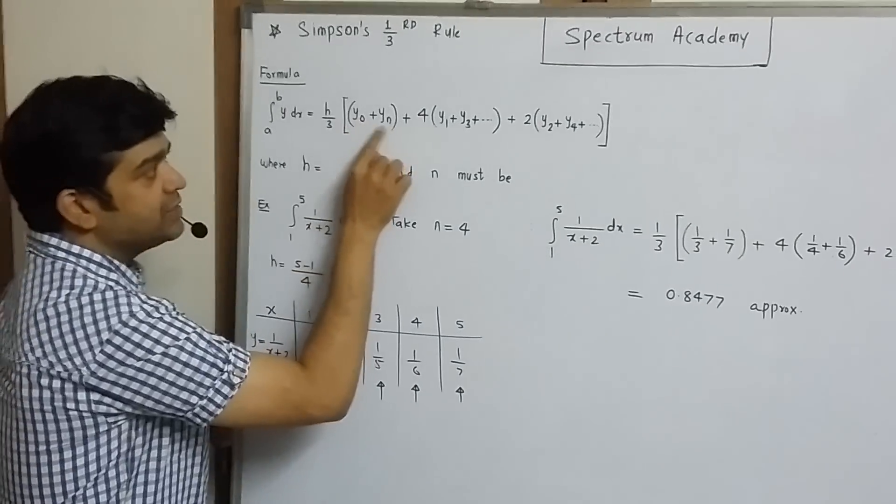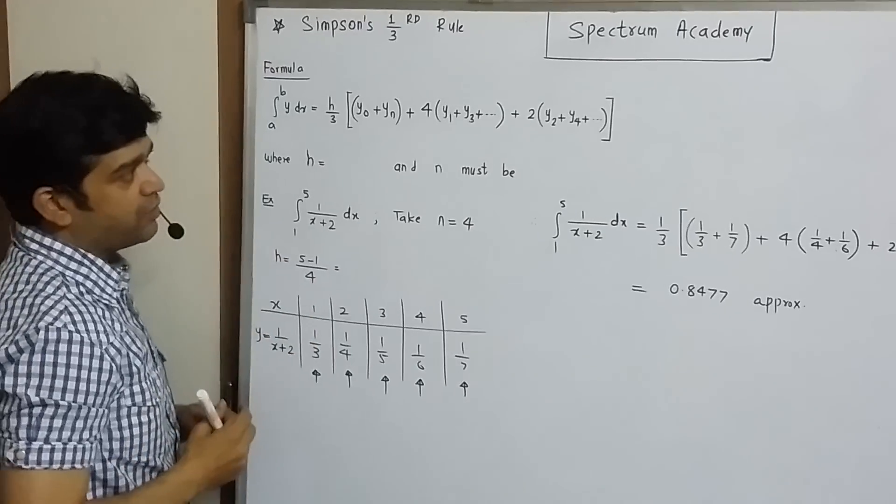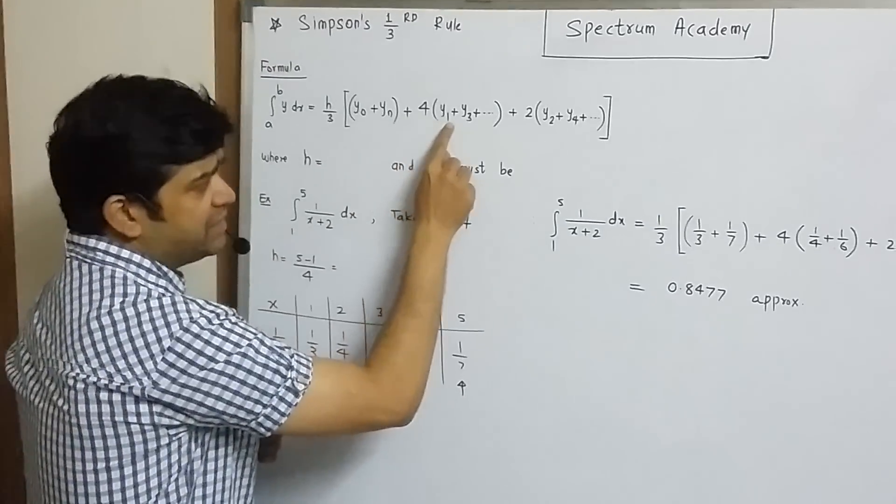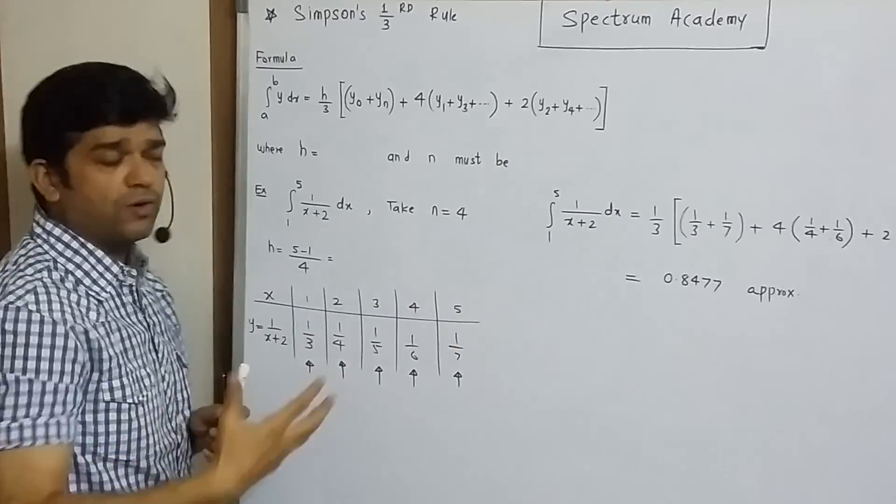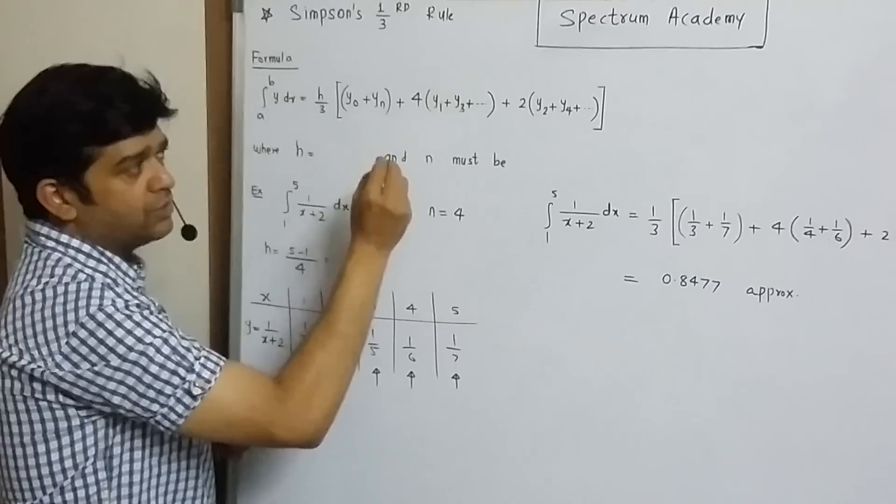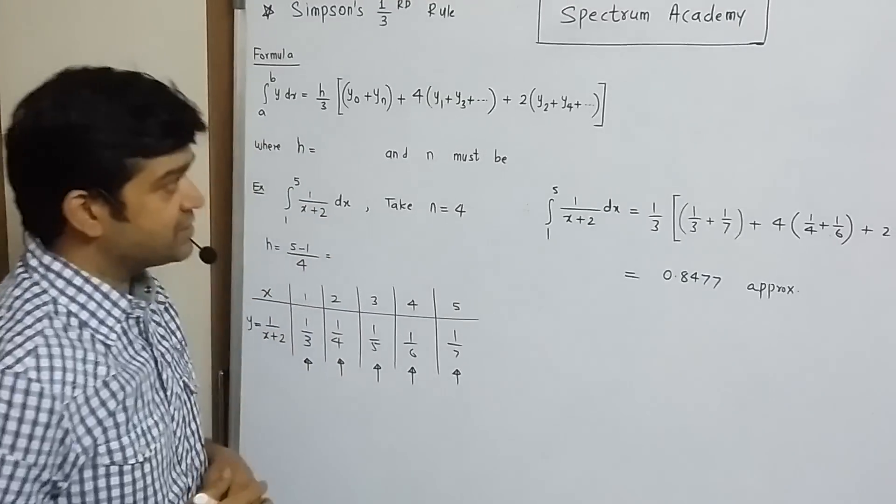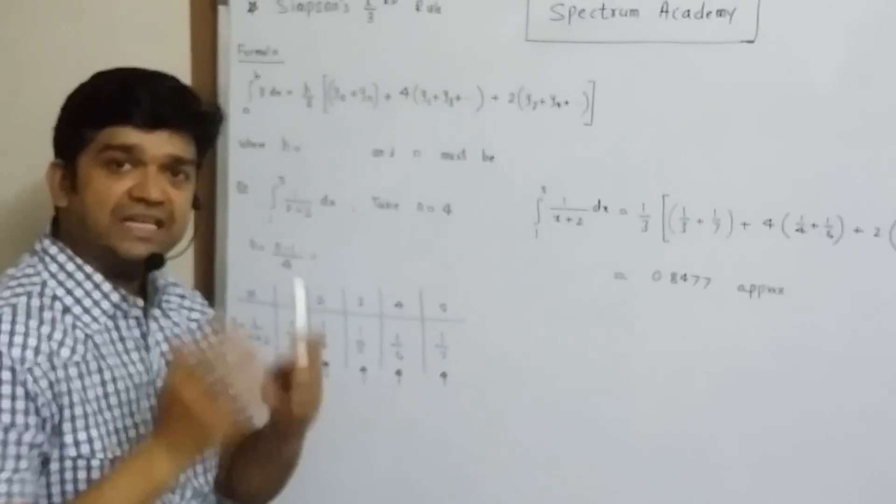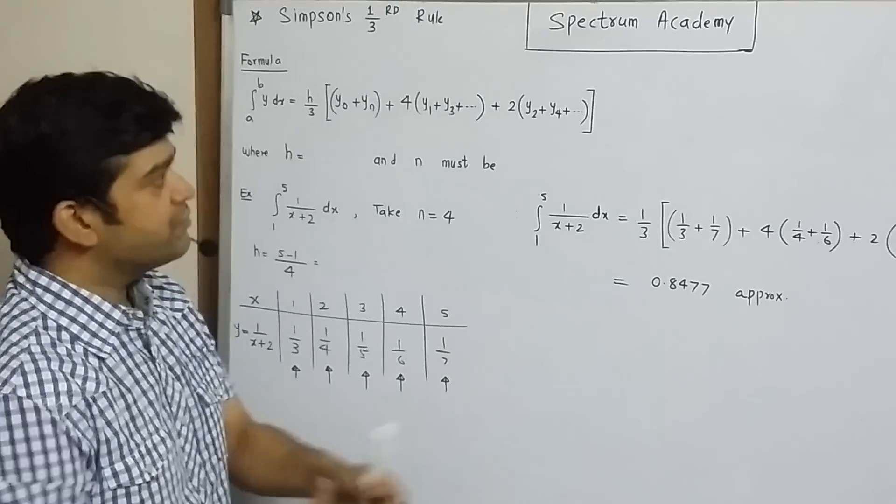See, y0 and yn, these are extreme values of ordinates. And y1, y3, y5 and so on, these are odd number of ordinates. And y2, y4, y6, these are even values of ordinates.